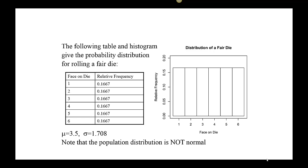We calculate the population mean as 3.5. The standard deviation is approximately 1.708. When we look at the distribution, we have a uniform distribution — the number of times the die lands on 1, 2, 3, 4, 5, and 6 is approximately the same. Using this information, we cannot use the z-table or determine anything about a particular occurrence. So how are we going to resolve this issue?